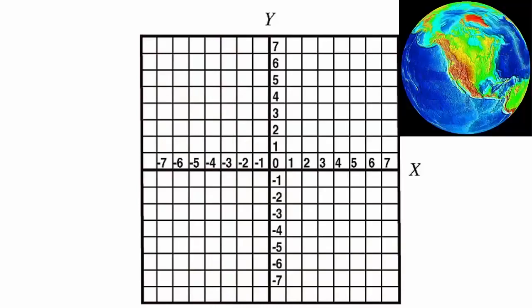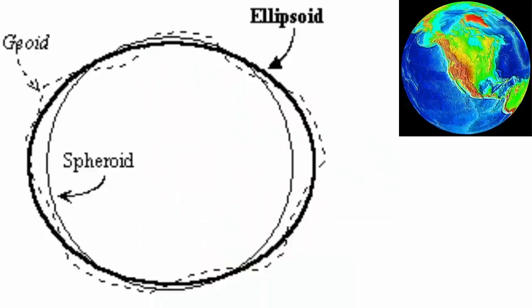To locate ourselves on the surface of the planet, we need a similar method of coordinates, but the challenge is that the Earth's surface isn't flat. It's basically a sphere.